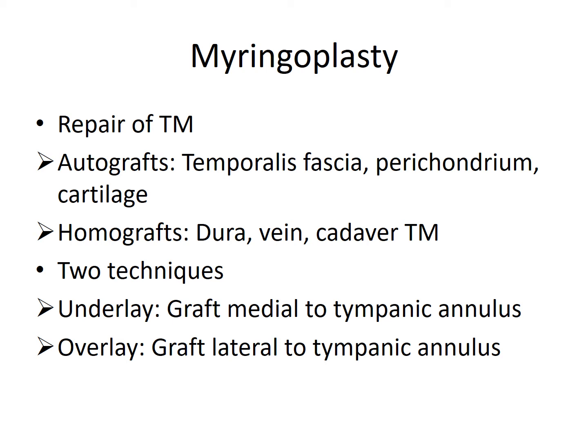That is why Temporalis Fascia is one of the most preferred graft materials for ear surgery. Some homografts that can be used from cadavers include Dura, Vein grafts, or cadaver Tympanic Membrane — however these are very rarely used; most of the times autografts are used. Based on the placing of the graft material, Myringoplasty can be of two types: Underlay or Overlay.